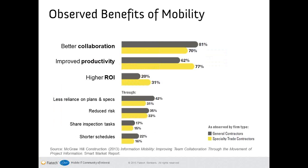Regarding mobility in particular, contractors in the industry have observed improved project performance through collaboration, productivity and cost improvements using information mobility. These improvements are achieved through practical aspects of fieldwork, such as less reliance on plans and specifications, reduced risk, reduced transactions, distributing inspection tasks and shorter project schedules. In FIATEC, we strive to solve technical and practical problems associated with implementing mobile technologies. Mobile technology has already clearly enhanced project performance with many EPCs around the world, but there is still much space for improvement.